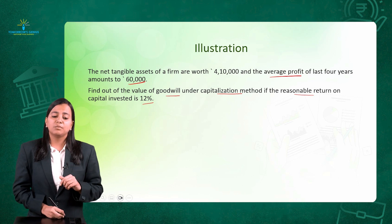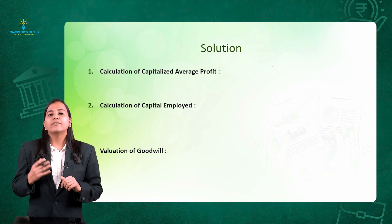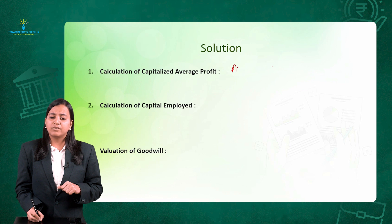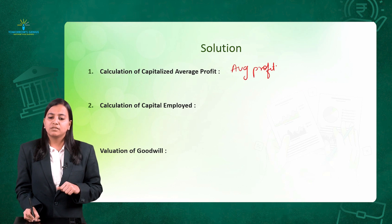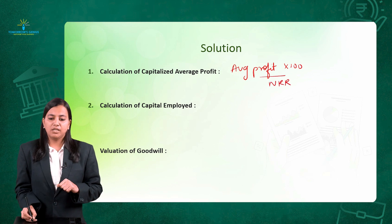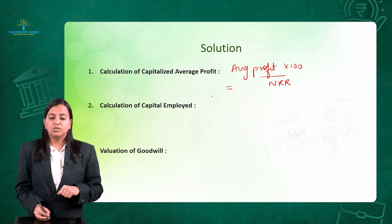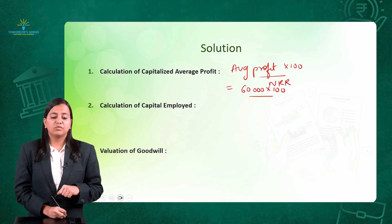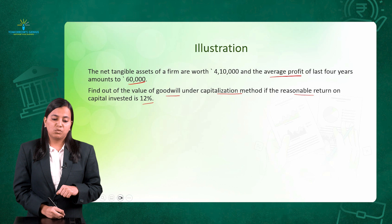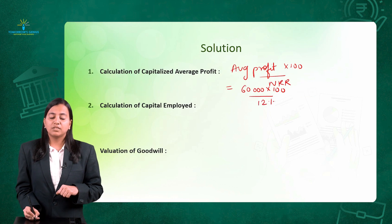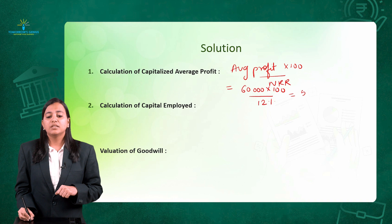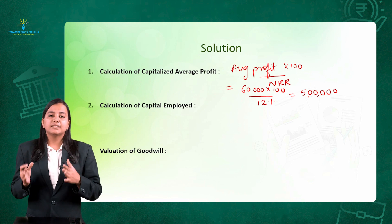Step number 1: Calculate Capitalized Average Profit using the formula Average Profit × 100 ÷ Normal Rate of Return. The average profit is readily given as ₹60,000. So: 60,000 × 100 ÷ 12% = ₹5,00,000 as the Capitalized Average Profit.